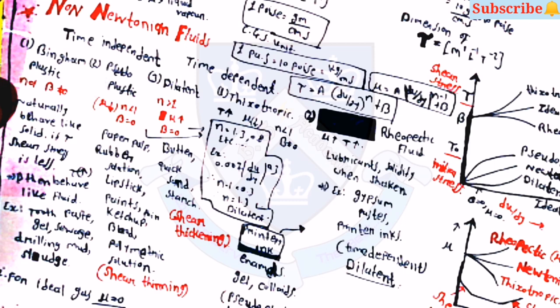For pseudo plastic fluids, n is less than 1 and beta equals zero. Examples are paper pulp, rubber solution, lipstick, paints, ketchup, blood, and polymeric solutions. For dilatant fluids, n is greater than 1 and beta equals zero. Examples include butter, quicksand, and starch.